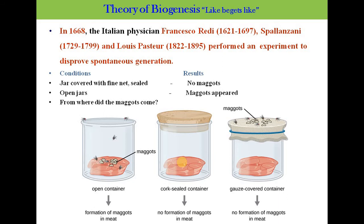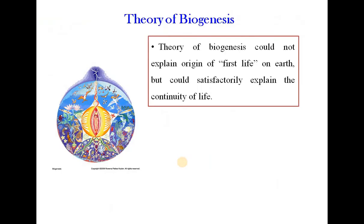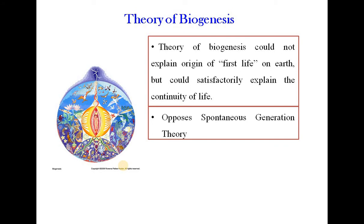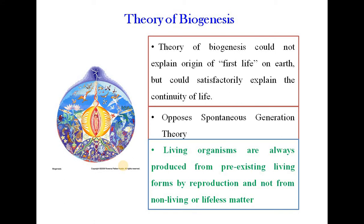So with this repeatable experiment, these scientists proved scientifically that life — here the maggots — comes from life, that is flies, and not from non-life, the dead meat. The important lesson is: life begets life. The theory of biogenesis could not explain the origin of the first life on earth, but could satisfactorily explain the continuity of life on earth. It opposes spontaneous generation very strongly: living organisms are always produced from pre-existing living forms by reproduction.